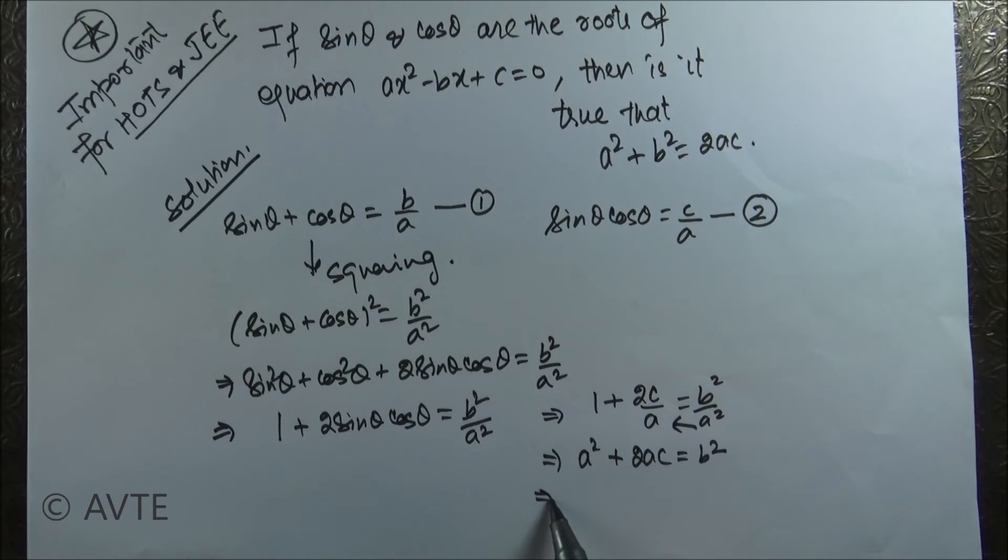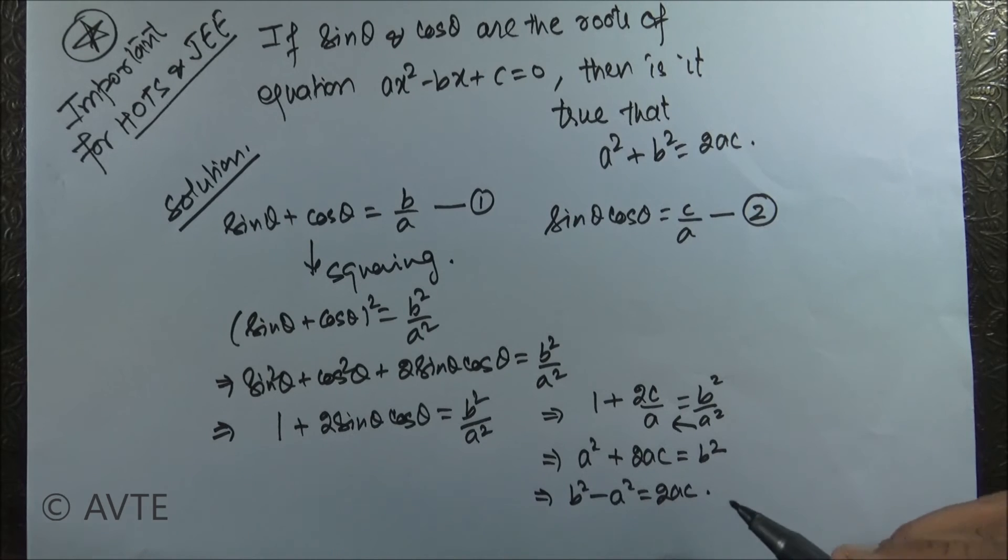So the answer is coming as b squared minus a squared is equal to 2 a c, not a squared plus b squared is equal to 2 a c. So the expression which is given is not true, whereas the true answer is b squared minus a squared is equal to 2 a c.